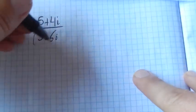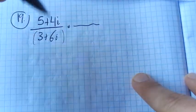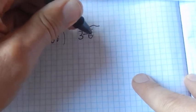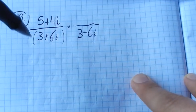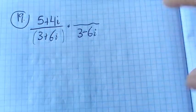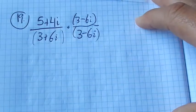What I need to do is multiply by some version of one that will cancel it out. The thing that's going to work for me here is the conjugate of 3 + 6i, which is 3 - 6i. So I'm going to multiply both top and bottom by that.